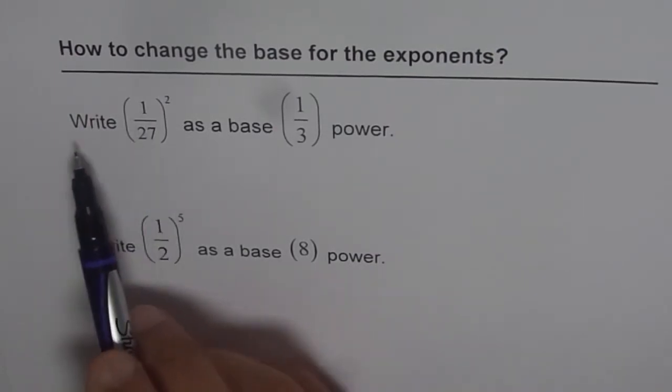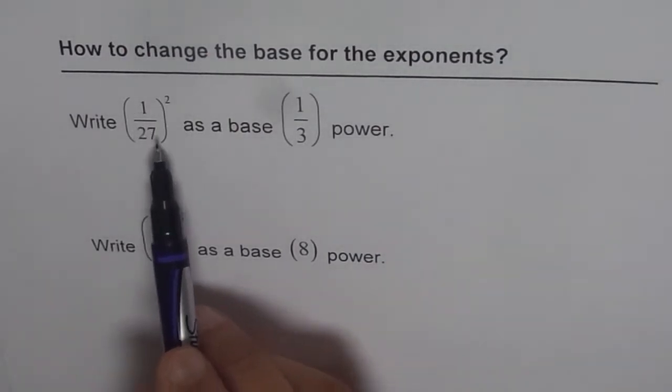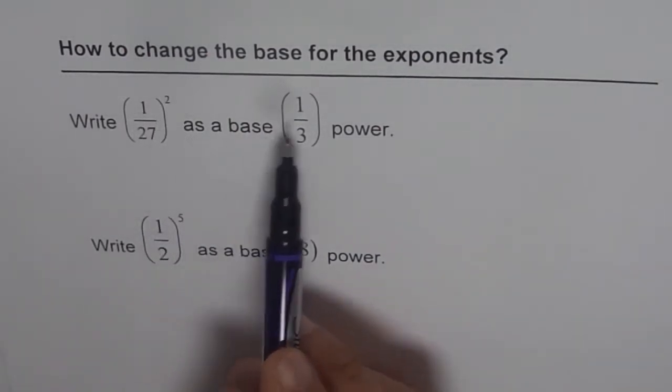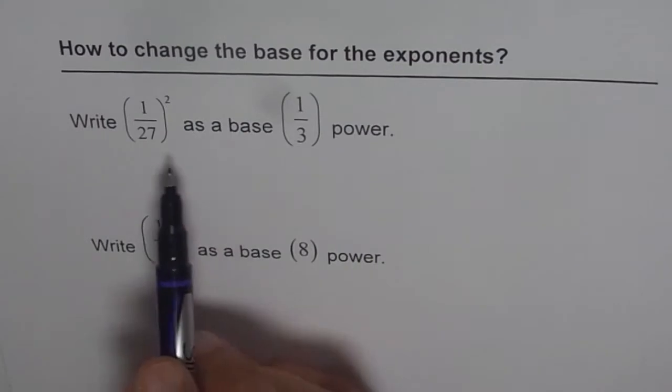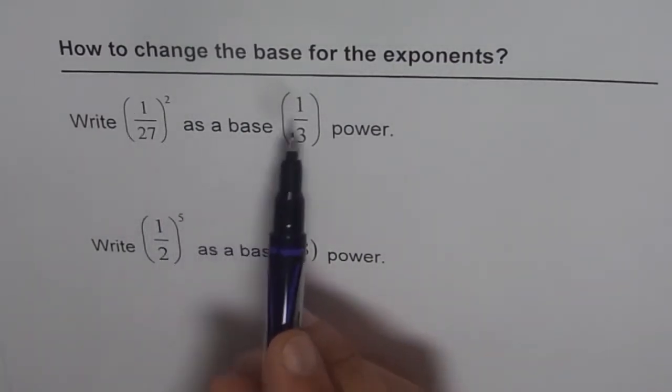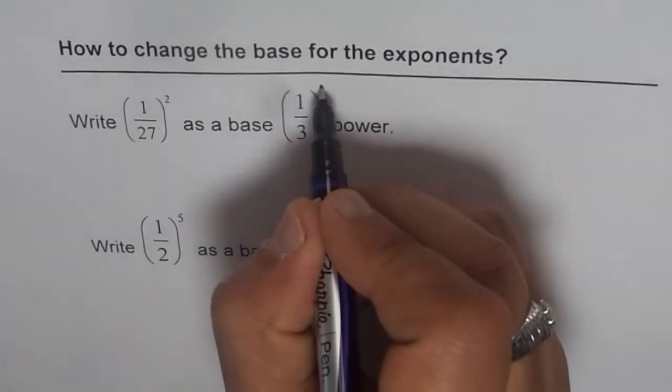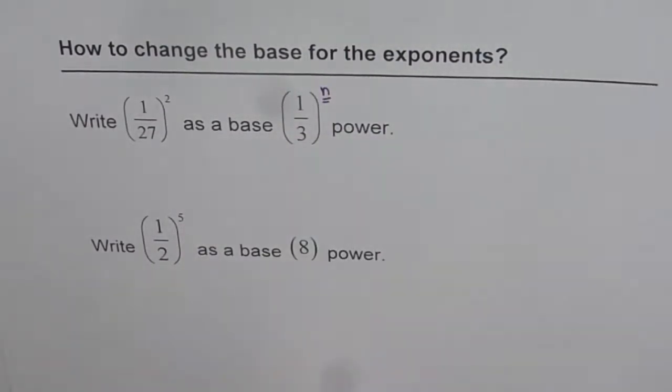We have write 1 over 27 square as a base of 1 over 3. So basically we have to find 1 over 27 square should be equal to 1 over 3 to the power of what? So this is what we need to figure out.